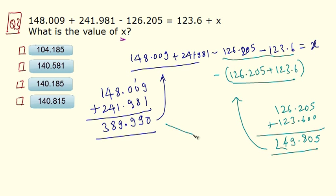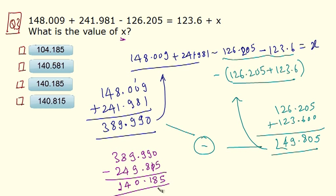Now you have to perform subtraction of these two terms. Let me write it here. 389.990 minus 249.805. So 10 minus 5 is 5. This becomes 1. 9 minus 1 is 8. 9 minus 8 is 1. There is the decimal point. 9 minus 9 is 0. 8 minus 4 is 4. 3 minus 2 is 1. So the answer is 140.185.